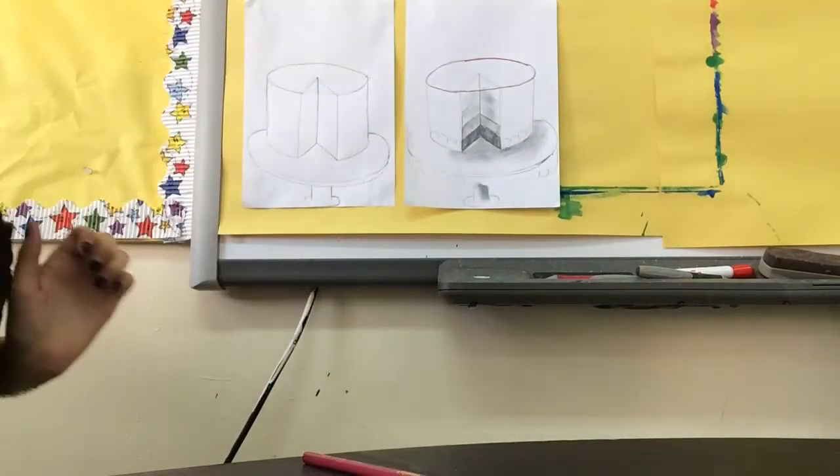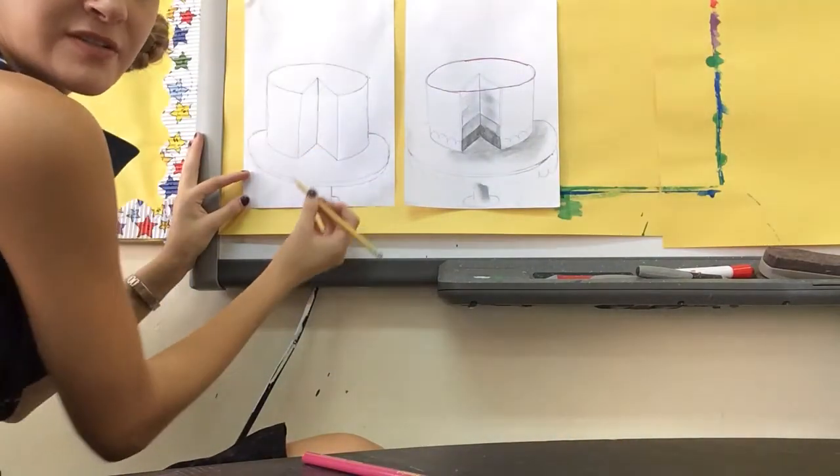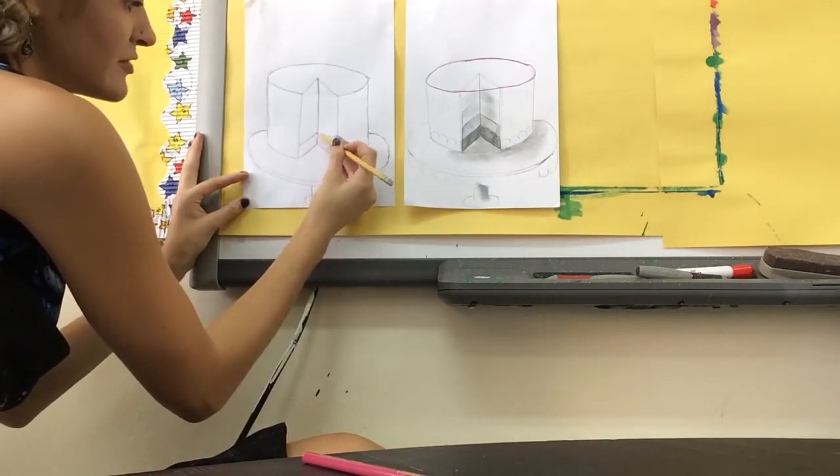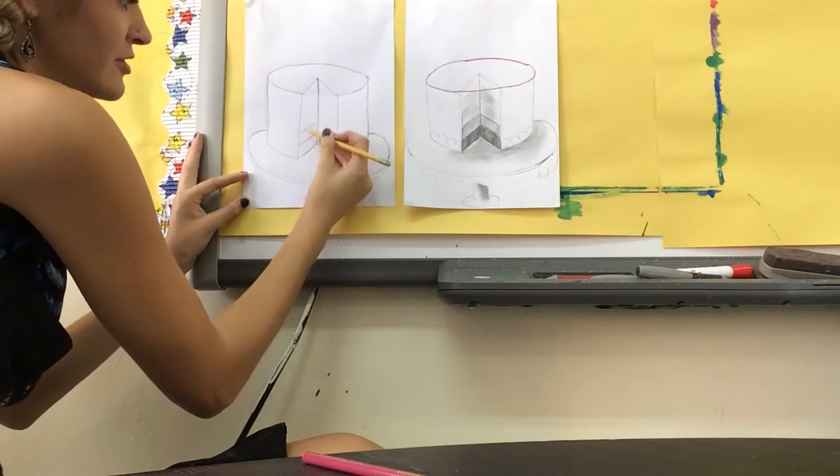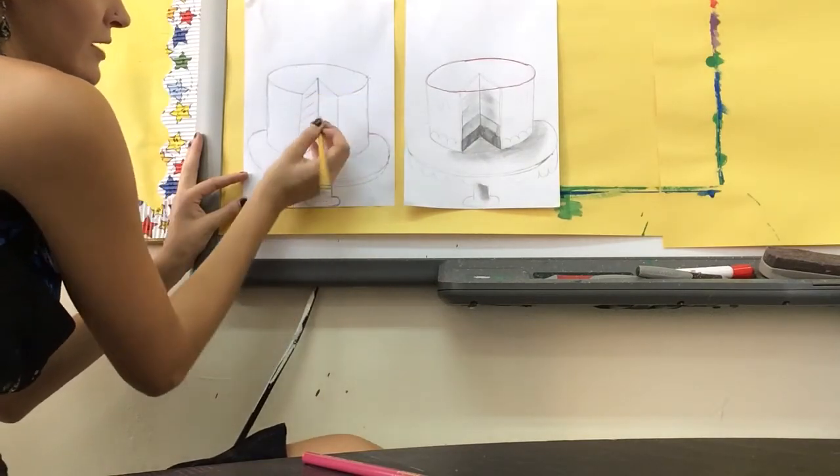Now it's time to do the shading work on your cake. I'm going to put in some layers inside. So I'm going to do some diagonal lines right here to demonstrate the different layers of the cut piece of cake.